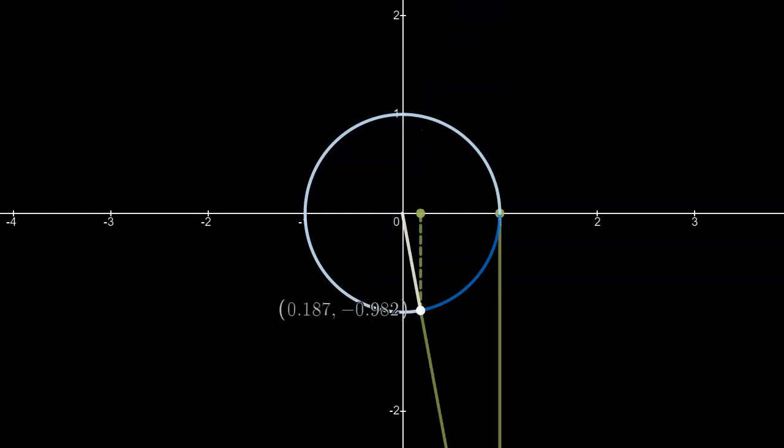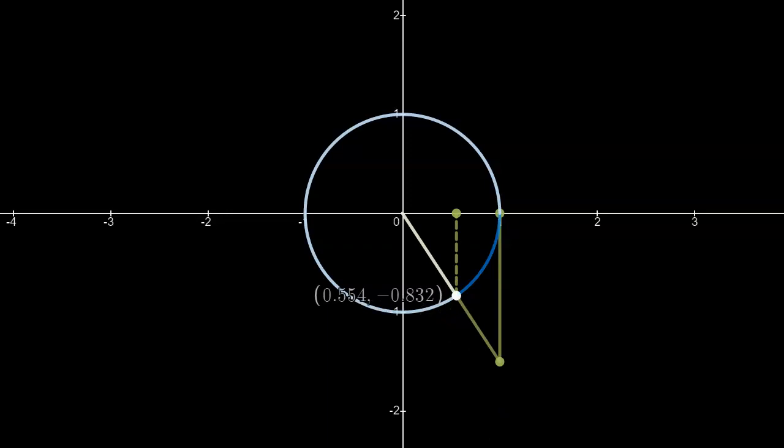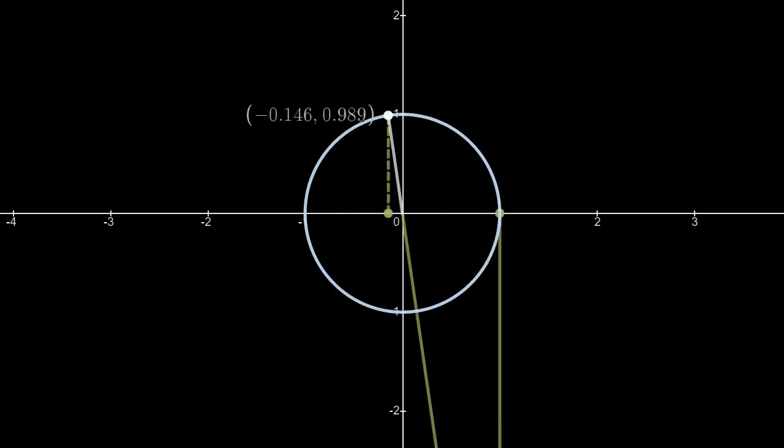And then as I move past 270 degrees or 3 pi over 2 radians, now what's happening is I go from large negative values of the tan ratio to smaller and smaller values. And then the cycle repeats.